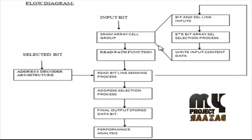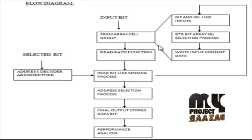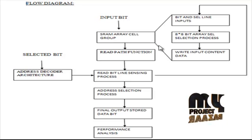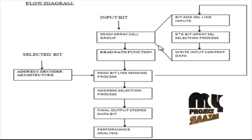Next, we see the flow diagram for the product. The input data bits are applied to our single-bit SRAM cell. We develop the array-based SRAM cell and develop the 8-bit storage-based array SRAM cell. Each SRAM cell consists of a sleep transistor and applies the threshold function for each 6-transistor-based SRAM cell. The bit and selection line inputs are applied to store either a 1 or 0 bit in each single-bit SRAM cell, and the write input content data is controlled.